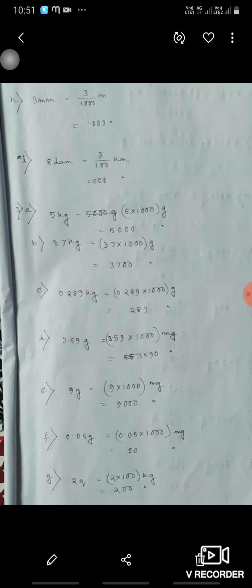3.59 gram means 3.59 into 1000 means 3590 milligram. 9 gram means 9 into 1000 milligram, 9,000 milligram. 0.05 gram means 0.05 into 1000, 50 milligram.